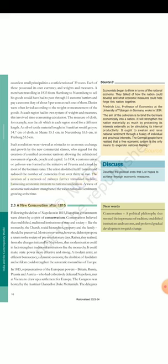Section 2.3: A new conservatism after 1815. Following the defeat of Napoleon in 1815, European governments were driven by a spirit of conservatism. Conservatives believed that established, traditional institutions of state and society, like the monarchy, the church, social hierarchies, property and the family, should be preserved. Most conservatives, however, did not propose a return to the society of pre-revolutionary days. Rather, they realized, from the changes initiated by Napoleon, that modernization could in fact strengthen traditional institutions like the monarchy. It could make state power more effective and strong. A modern army, an efficient bureaucracy, a dynamic economy, the abolition of feudalism and serfdom could strengthen the autocratic monarchies of Europe.